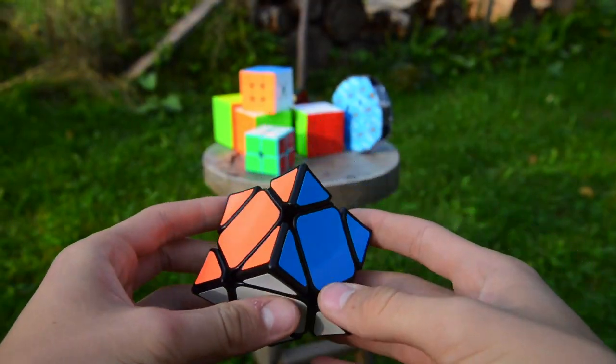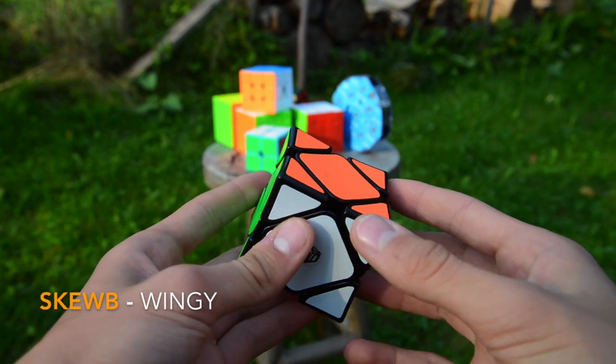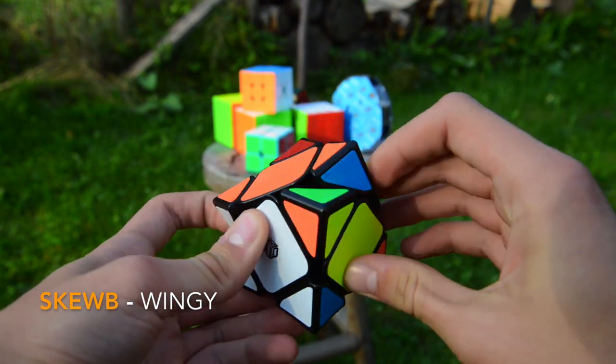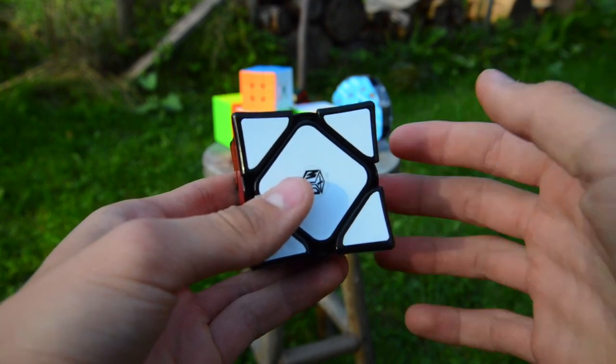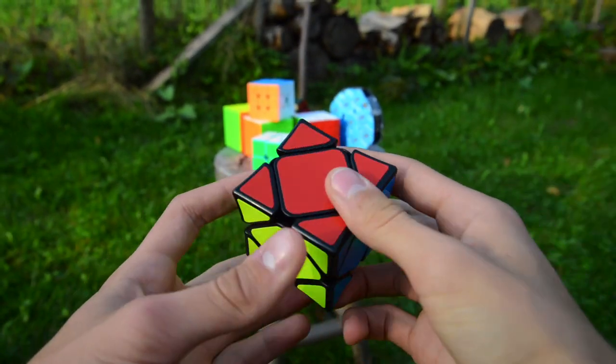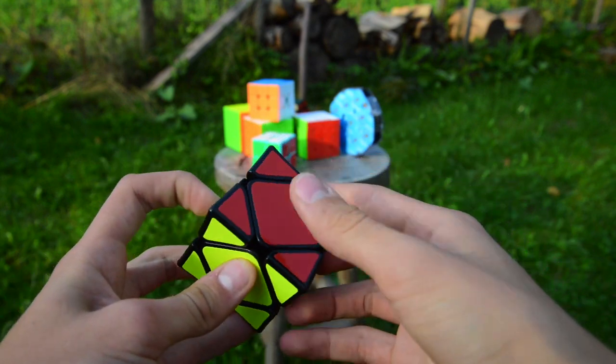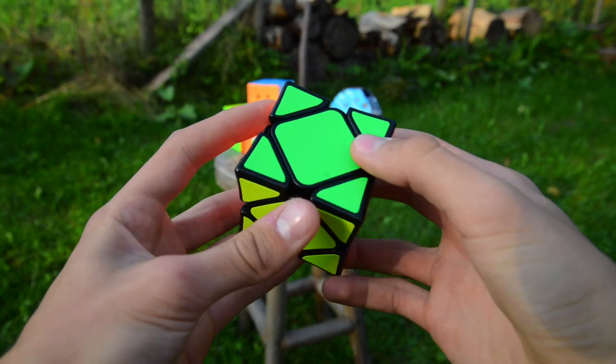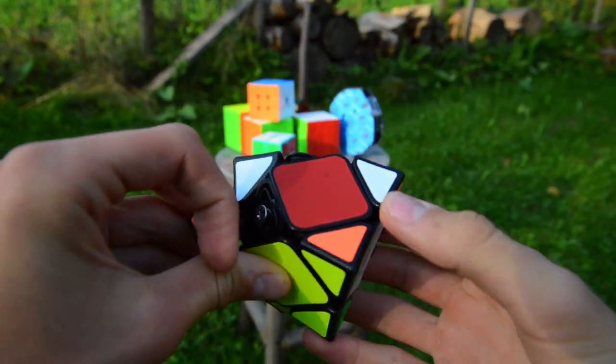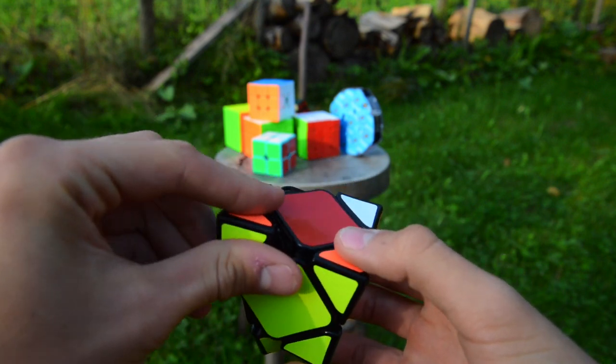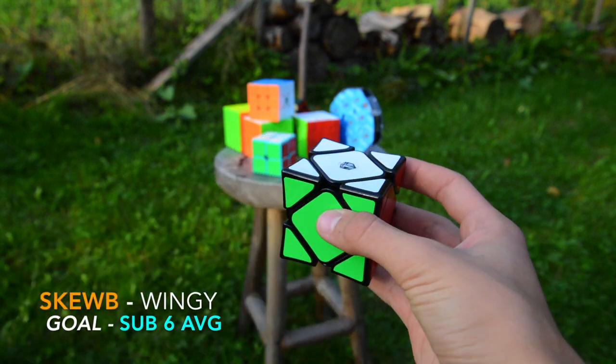Next up are three of my probably favorite events: skewb, pyraminx, and square-1. For skewb, I actually do not like the Wingy Skewb, although I can't even solve the regular QiYi skewb anymore. It feels really weird. It locks up and I do not like it at all. My goal is sub-6 average and a national record single.